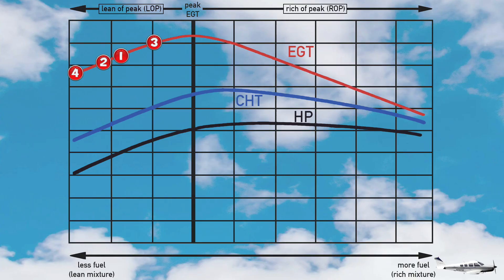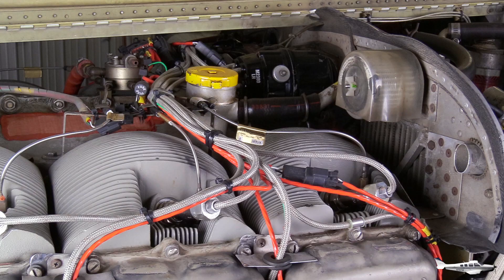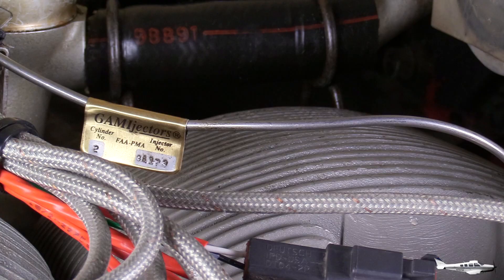If you have a fuel injected engine, there's a better option. Since there's a separate fuel injection nozzle for each cylinder, it is possible to adjust individual injectors, thereby making the range over which the cylinders spread out in this chart much smaller. GAMI is the name of the company that makes these injectors, and if you have a fuel injected engine that isn't happily running lean-of-peak, odds are their GAMI injectors can help.